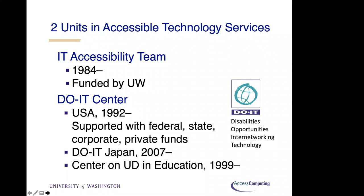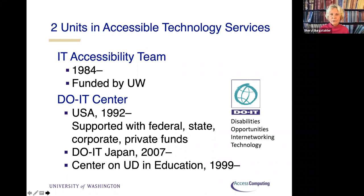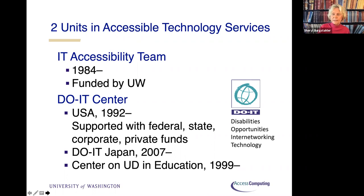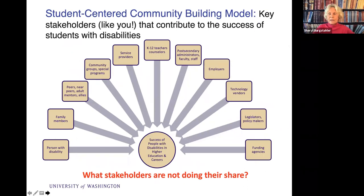We even have a DOIT Center in Japan at the University of Tokyo, which started in 2007, and there are some other implementations particularly in Asia. We also support the Center on Universal Design and Education, which started in 1999 with funding by the U.S. Department of Education. I'll give you an overview of how we approach things at the university, but also in our DOIT efforts. We have a student-centered approach in what we do.